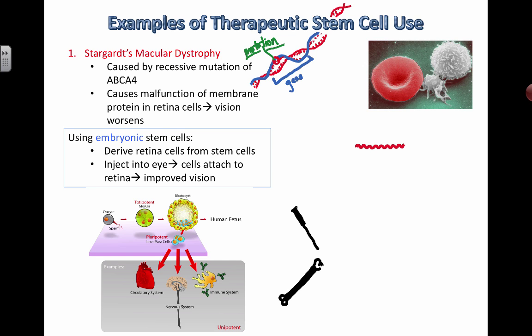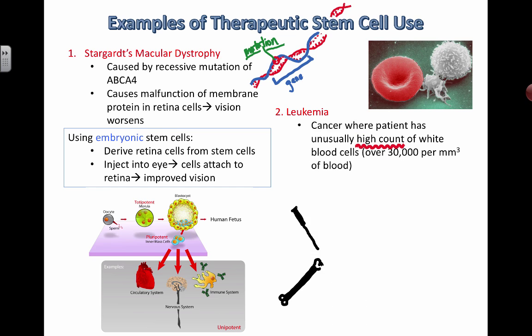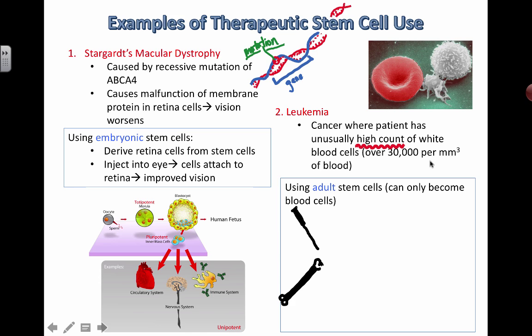The other disease that's been treated effectively with stem cells is leukemia — basically cancer of the blood, which results in unusually high white blood cell counts, over 30,000 white blood cells per cubic millimeter of blood. This treatment is less controversial because, unlike Stargardt's where we used embryonic stem cells, here we can actually use adult stem cells. These adult stem cells are limited in that they can only turn into blood cells, but there are many different types of blood cells.